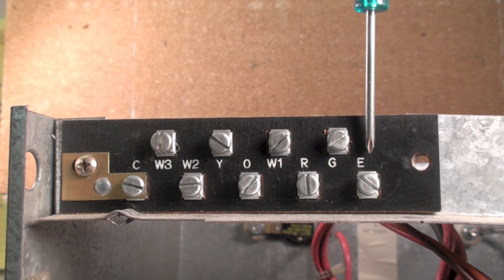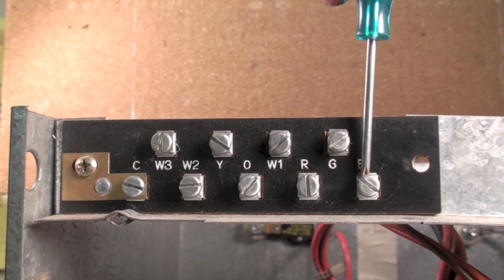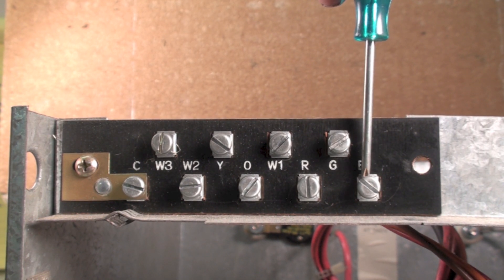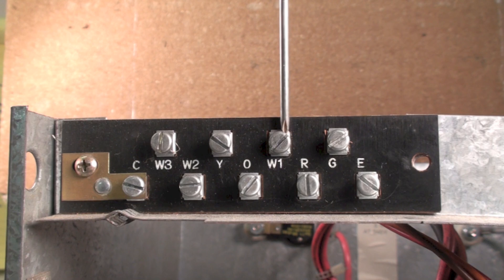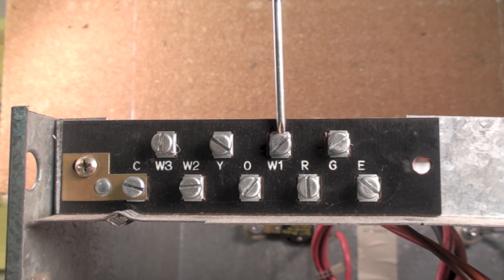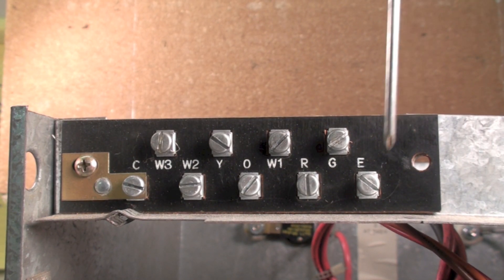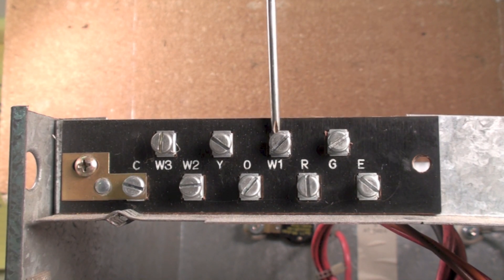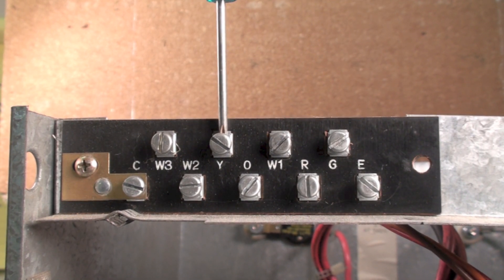E will be jumped to W1, and power will come through E to W1, but it won't go to Y. That's how most of them are set up.